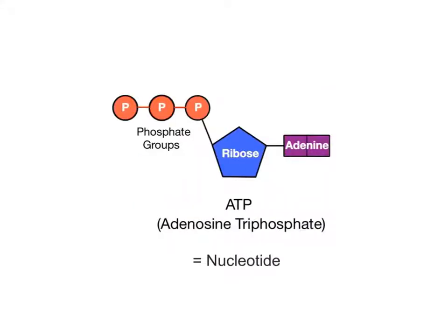ATP is technically classified as a nucleotide, and like other nucleotides, has a three-part structure. It consists of a molecule of the nitrogenous base adenine bound to the sugar ribose, which together are called adenosine, attached to three phosphate groups. The term triphosphate comes from ATP's three phosphate groups.